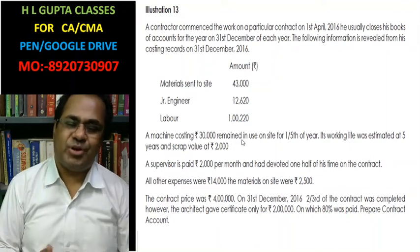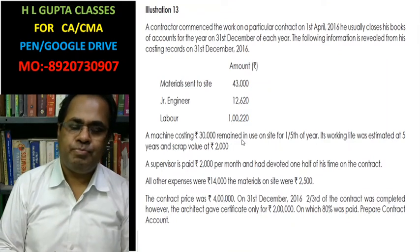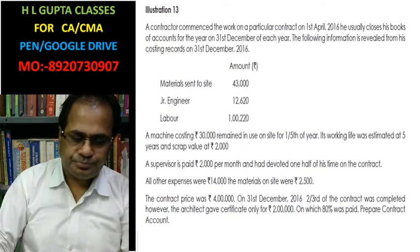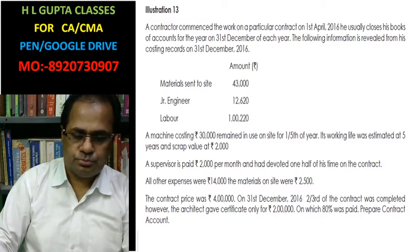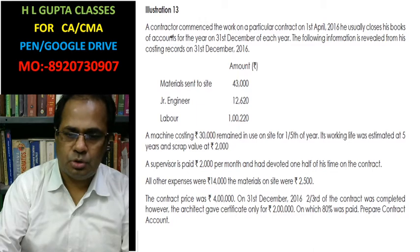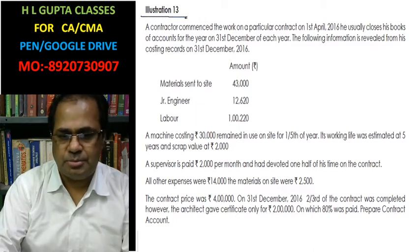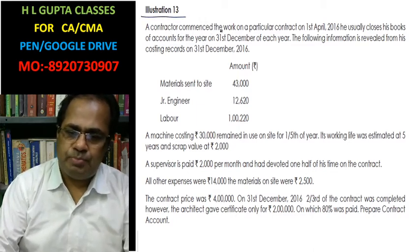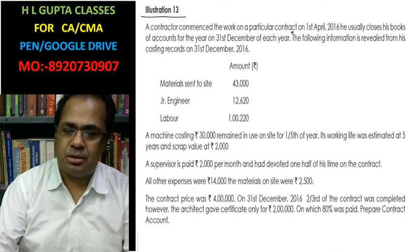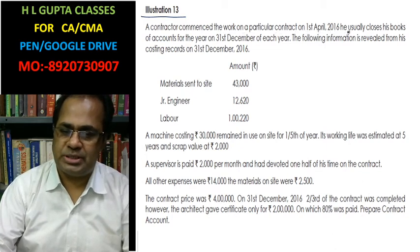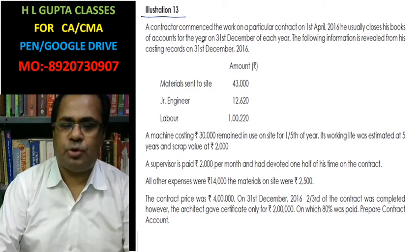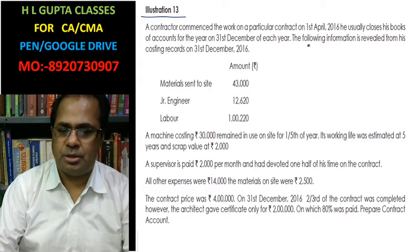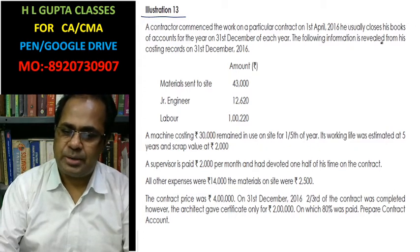Hello friends, I am going to discuss Illustration Number 13 of CMA Inter Contract Costing. Please read the question. Let's read Illustration Number 13. A contractor commenced the work on a particular contract on 1st April 2016. He closes his books of accounts for the year on 31st December each year. The following information is revealed.